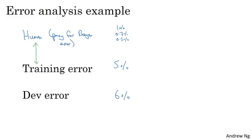And remember also our definitions from the previous video that this gap between Bayes error or estimate of Bayes error and training error, I was calling that a measure of the avoidable bias. And this as a measure or an estimate of how much of a variance problem you have in your learning algorithm.